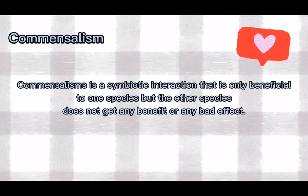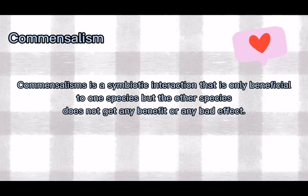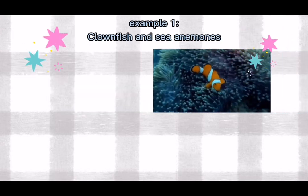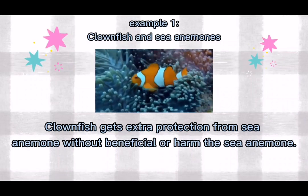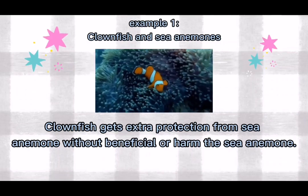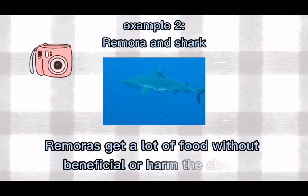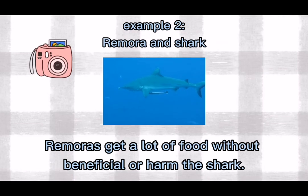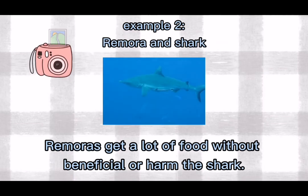Commensalism is a symbiotic interaction that is only beneficial to one species, but the other species does not get any benefit or any bad effect. Clownfish and sea anemones: clownfish get extra protection from sea anemones without any benefit or harm to the sea anemone. Remora and sharks: remoras get a lot of food without any benefit or harm towards the shark.